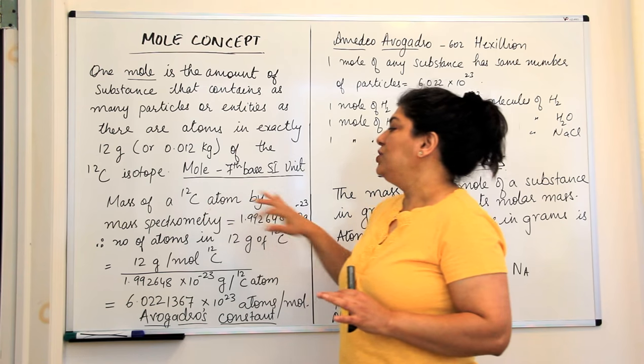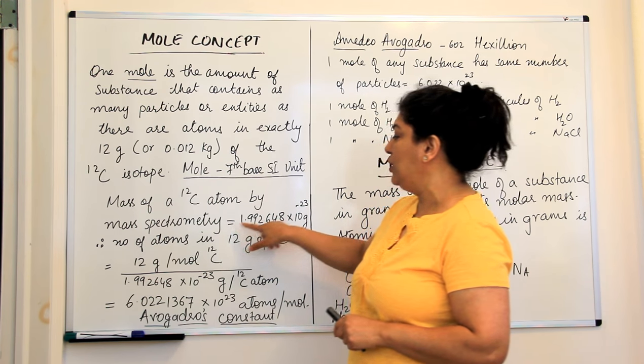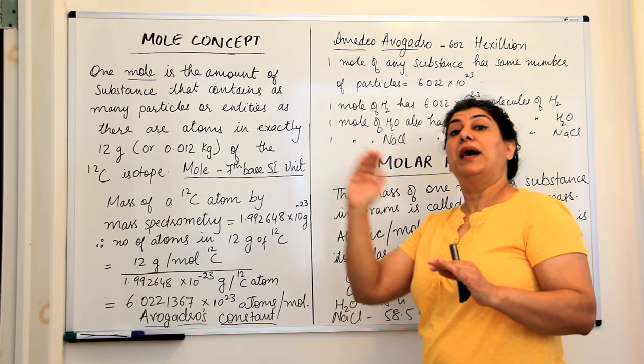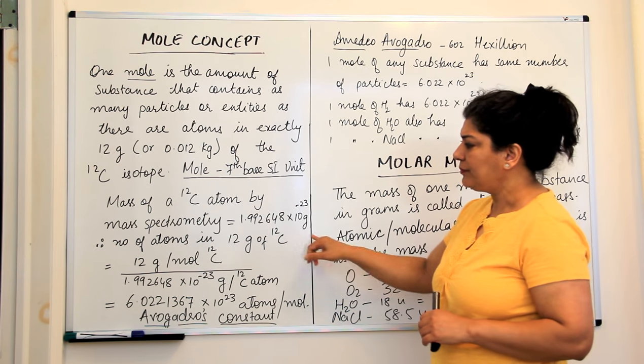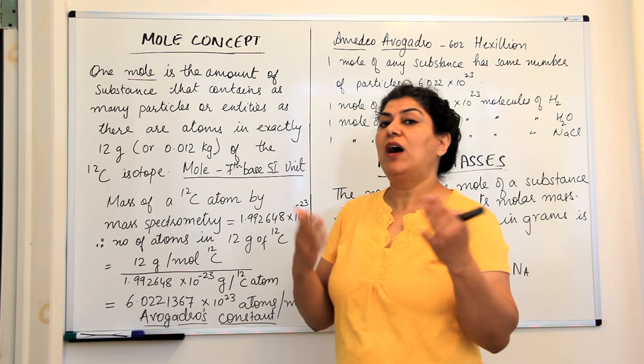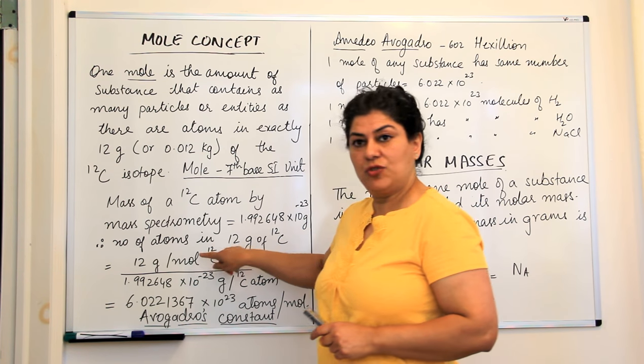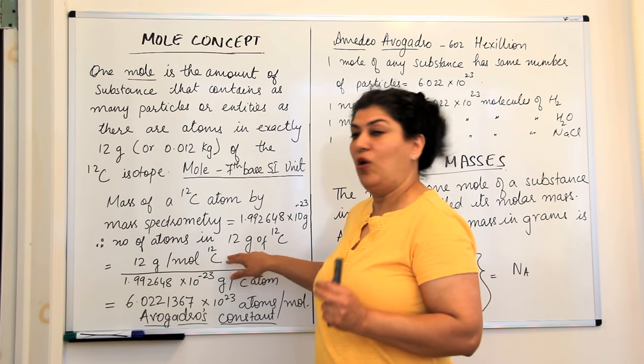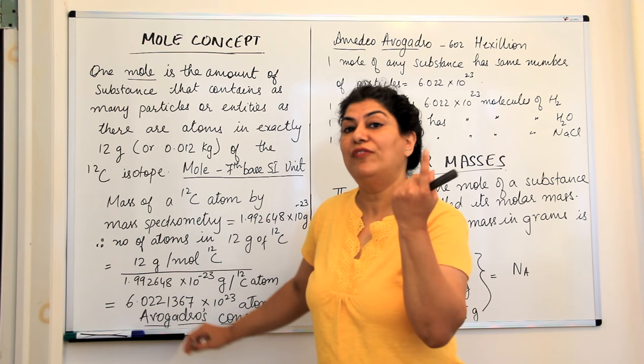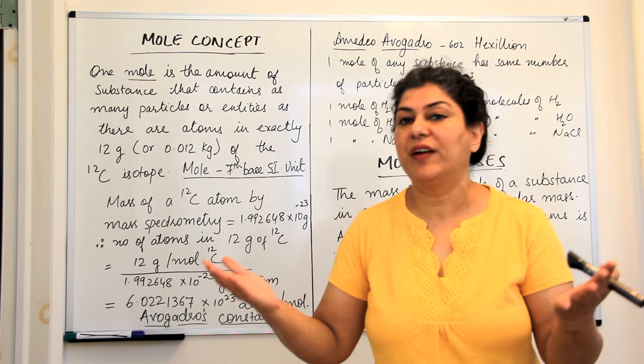The mass of a carbon-12 atom, if we calculate it by mass spectroscopy, it was calculated to be equal to 1.992648 into 10 to the power minus 23 grams. Therefore, if you have 12 grams of carbon-12, how would you calculate the number of atoms in carbon-12? We take 12 grams in one mole of carbon-12 and how many atoms does it have? So we divide it by the mass of one atom. If we divide it by the mass of one atom, we will get how many atoms are there in 12 grams of carbon.